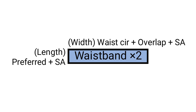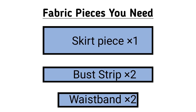Lastly, we want to cut out our waistband and we need two rectangles for that. The width of each rectangle should be your waist circumference plus 1 inch overlap plus 1 inch seam allowance. The length of the waistband should be about 2 inches, plus half an inch for joining to the bust strip and half an inch for joining to the skirt — that is 1 inch seam allowance. Take a good look at the images provided and cut your rectangles according to those specifications.